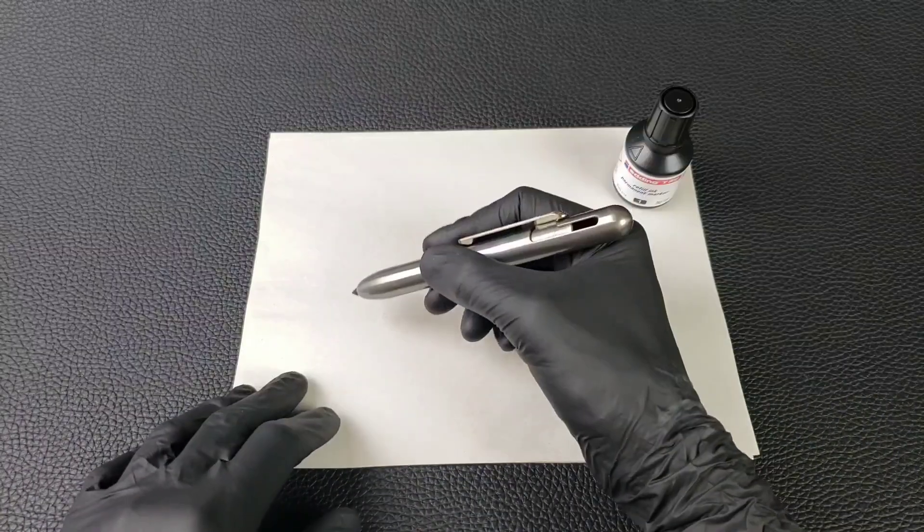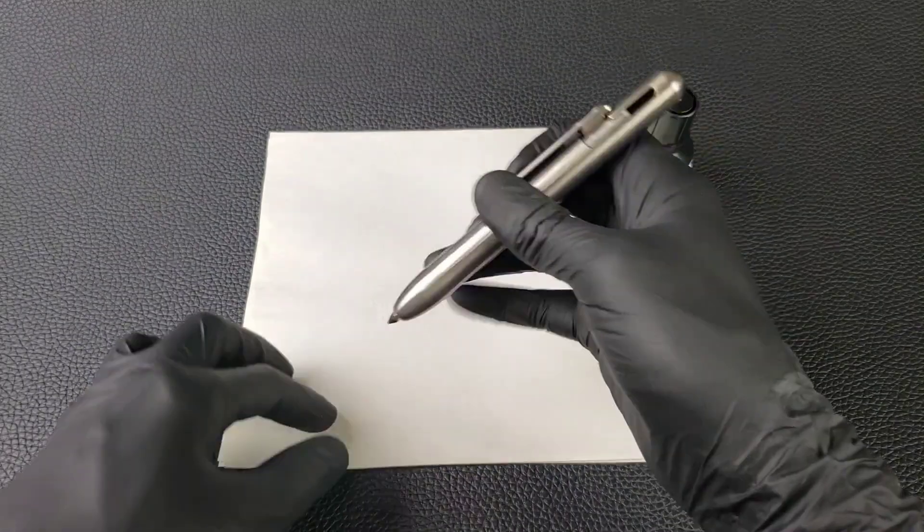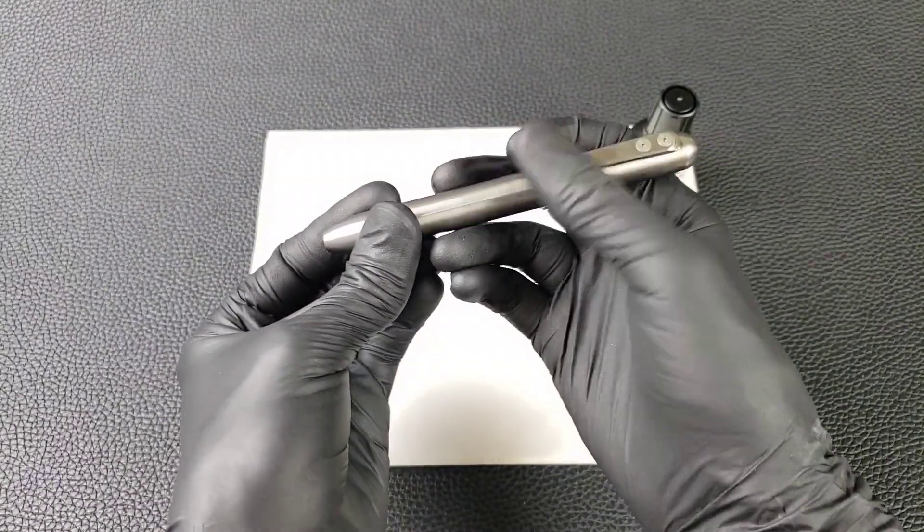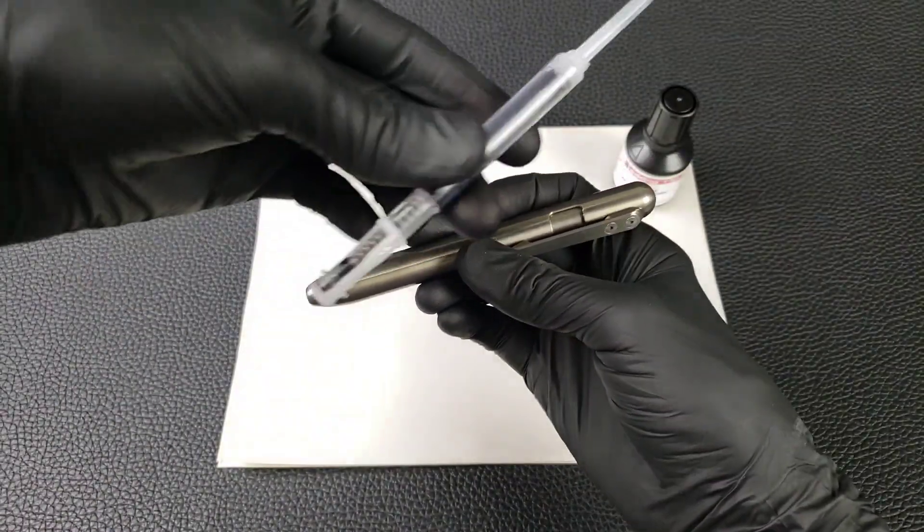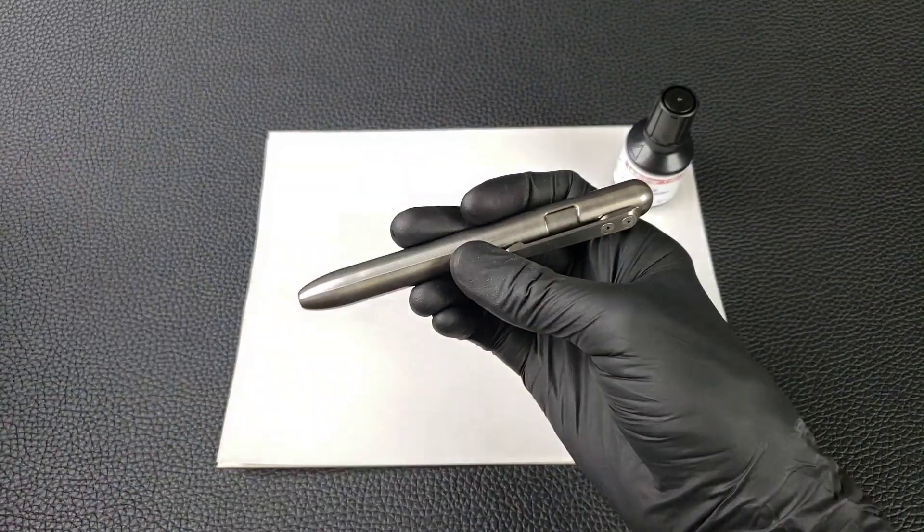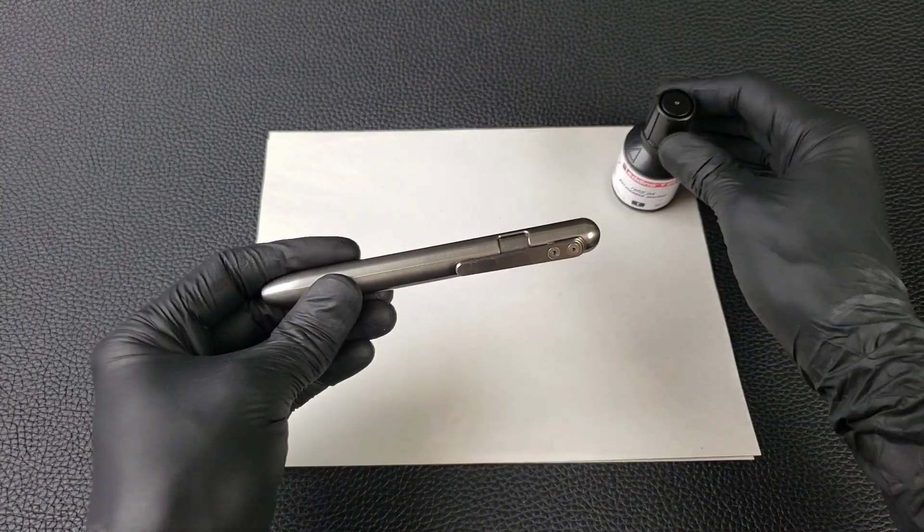Once the ink in your Marksmith is all used up and it doesn't write anymore, there's two options. You can either replace the cartridge with a new cartridge, like this, or you can refill the cartridge using permanent marker ink.